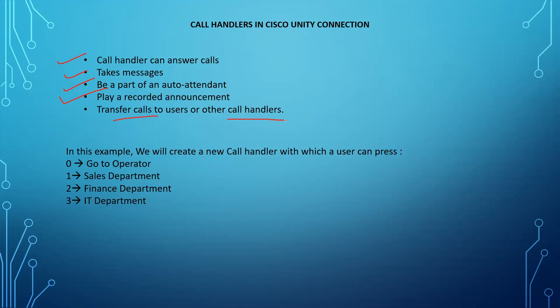It depends on how you configure the call handler in Cisco Unity Connection. A common example is a call center environment — whenever you dial a number, there's an announcement: 'Thank you for calling. Press one to go to this department, press two to go to this department, press three to go to this department.' Customer care lines often have options for eight, nine, zero, star, and pound keys as well.